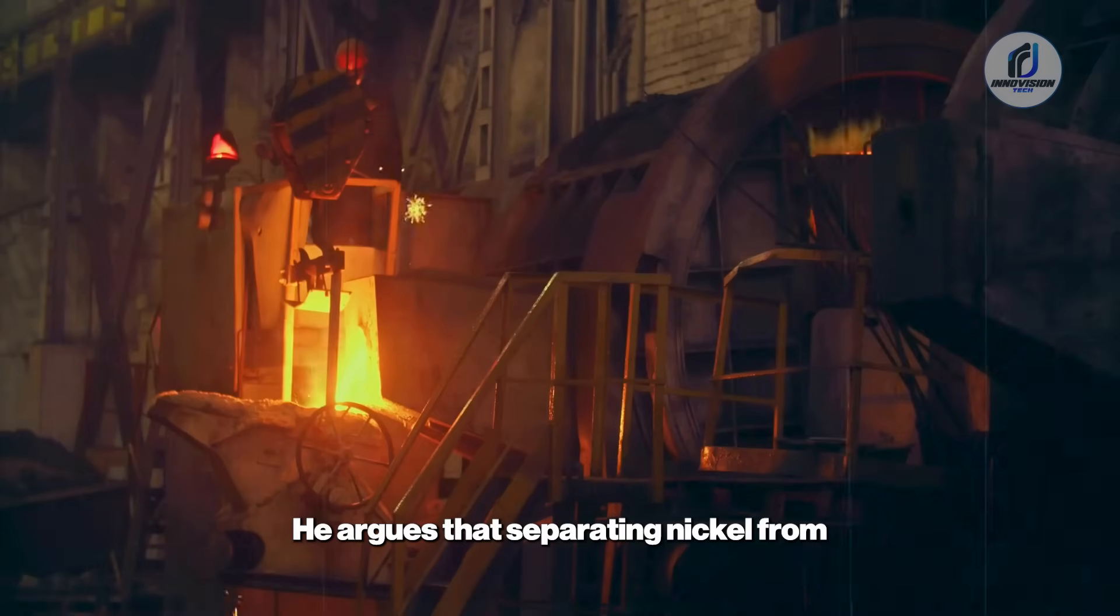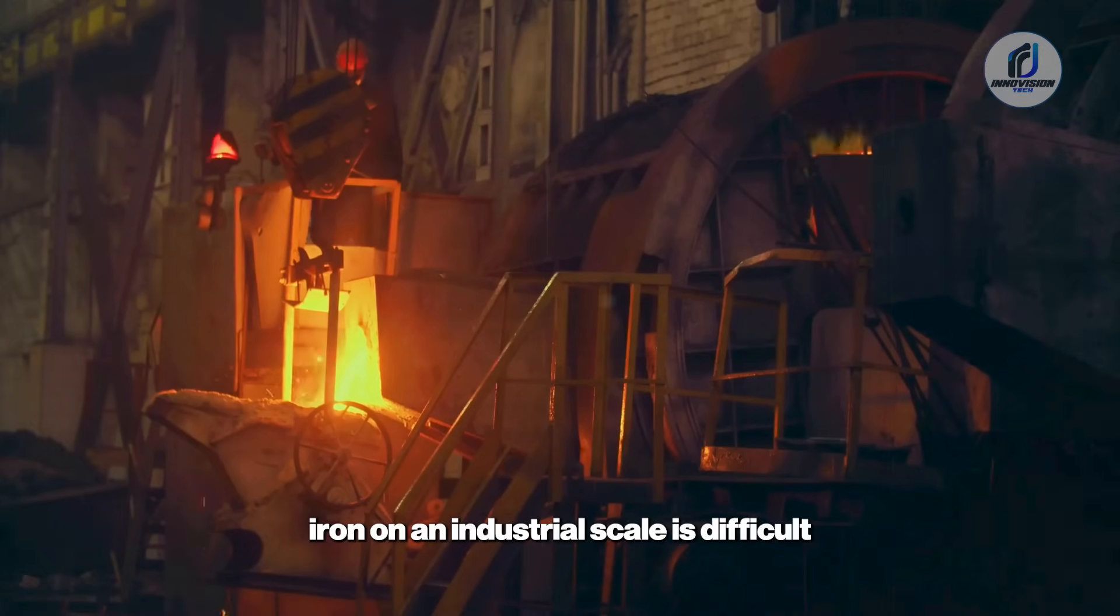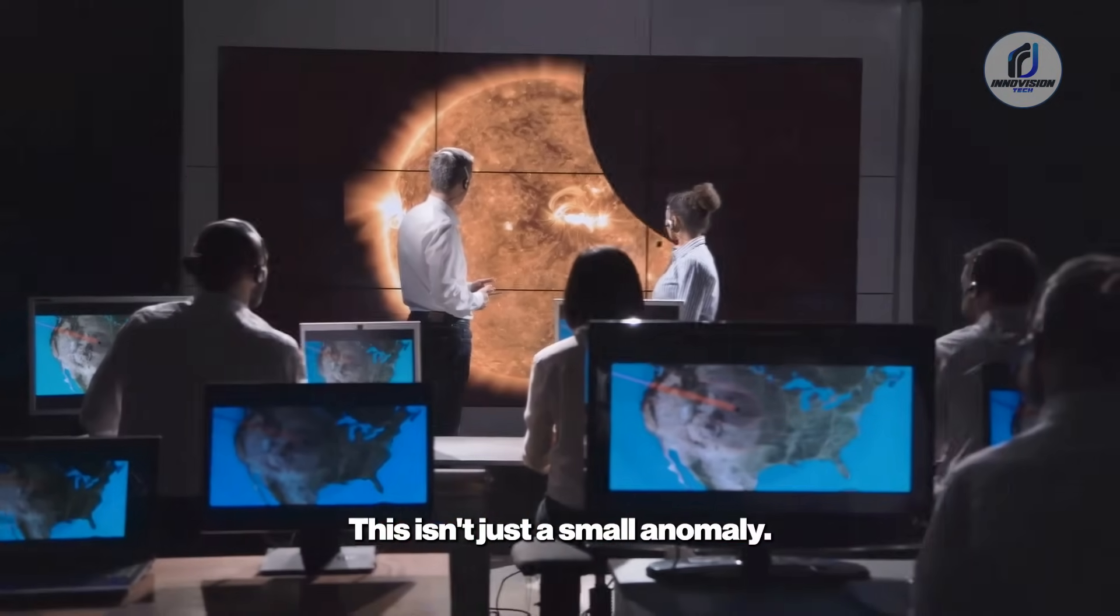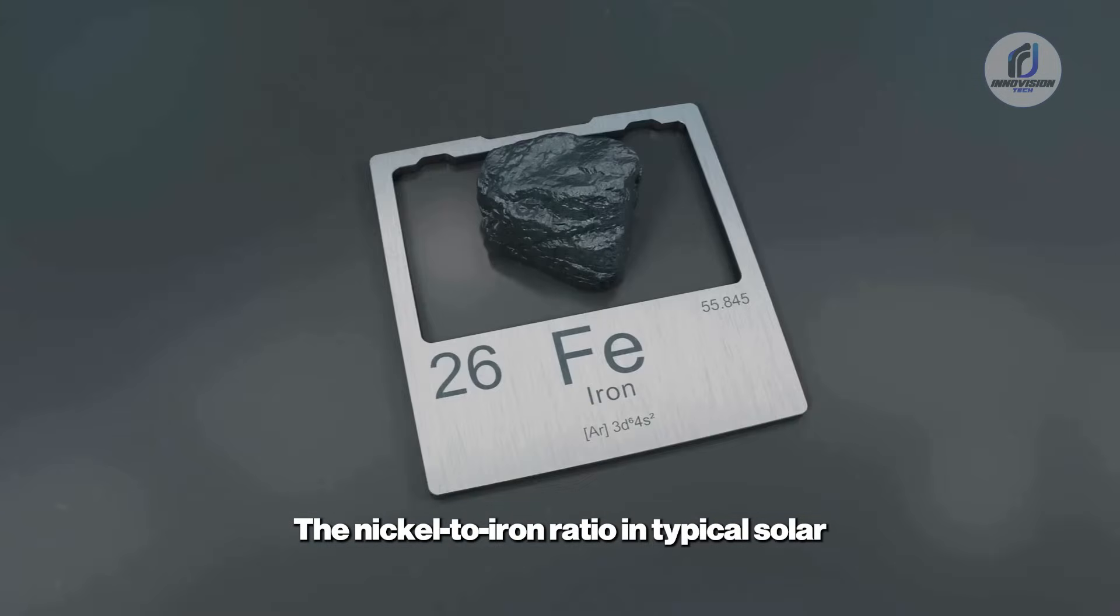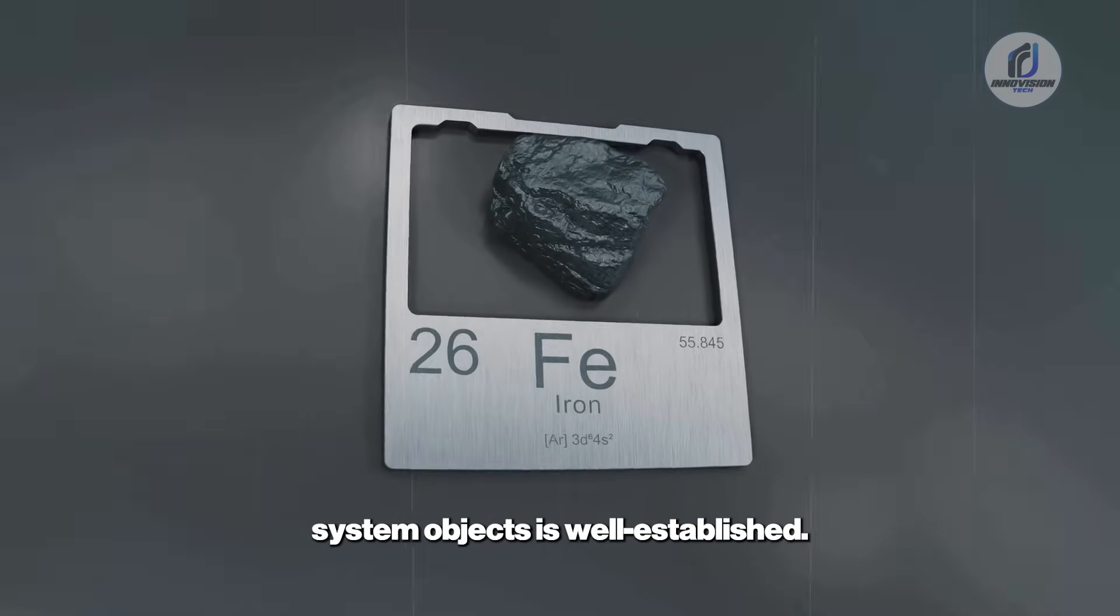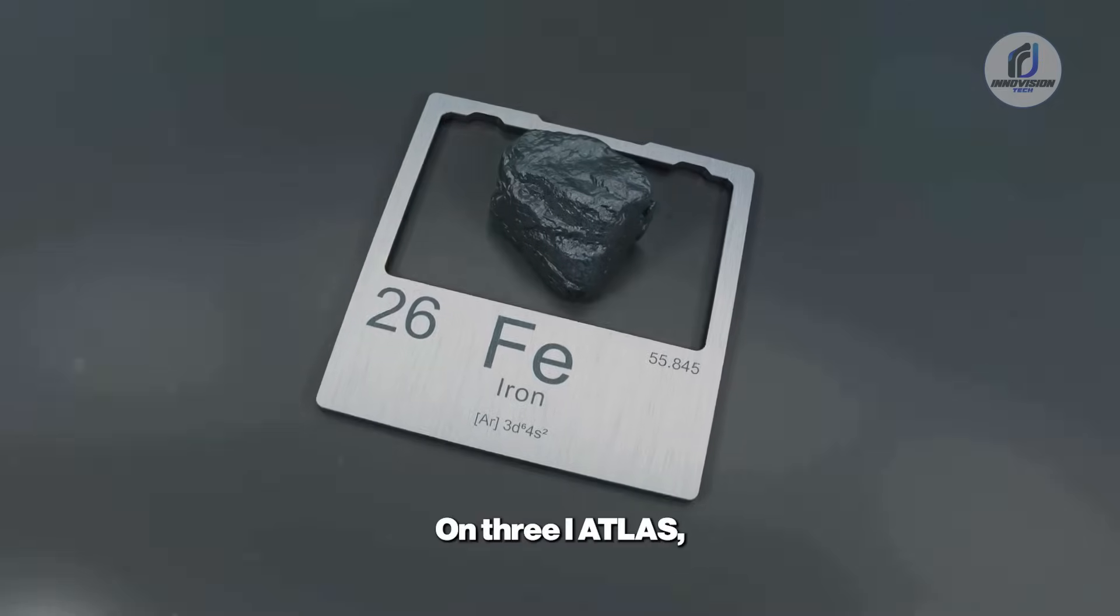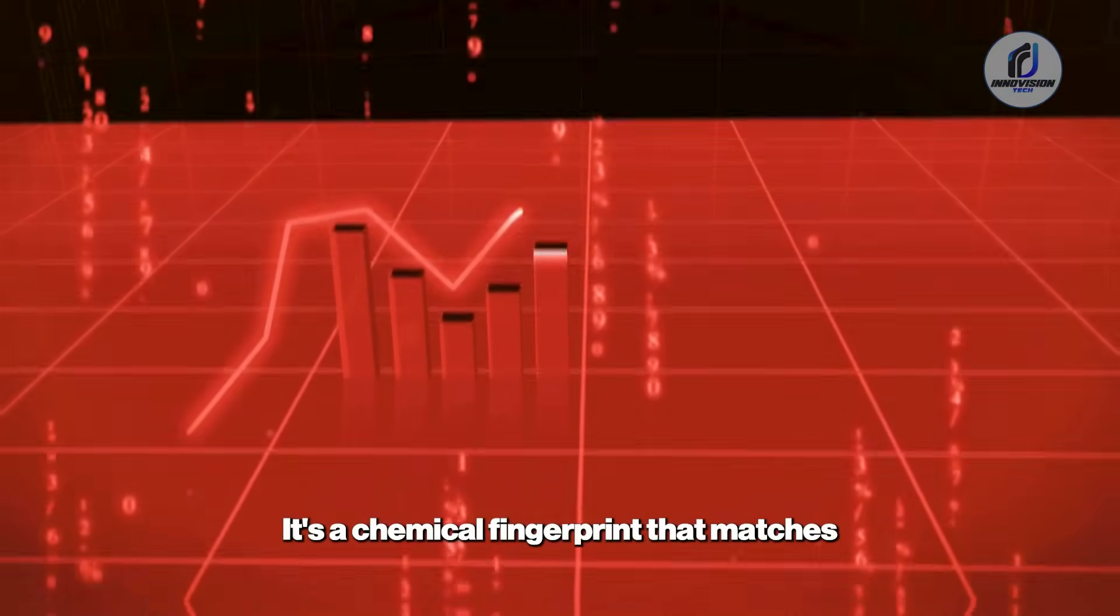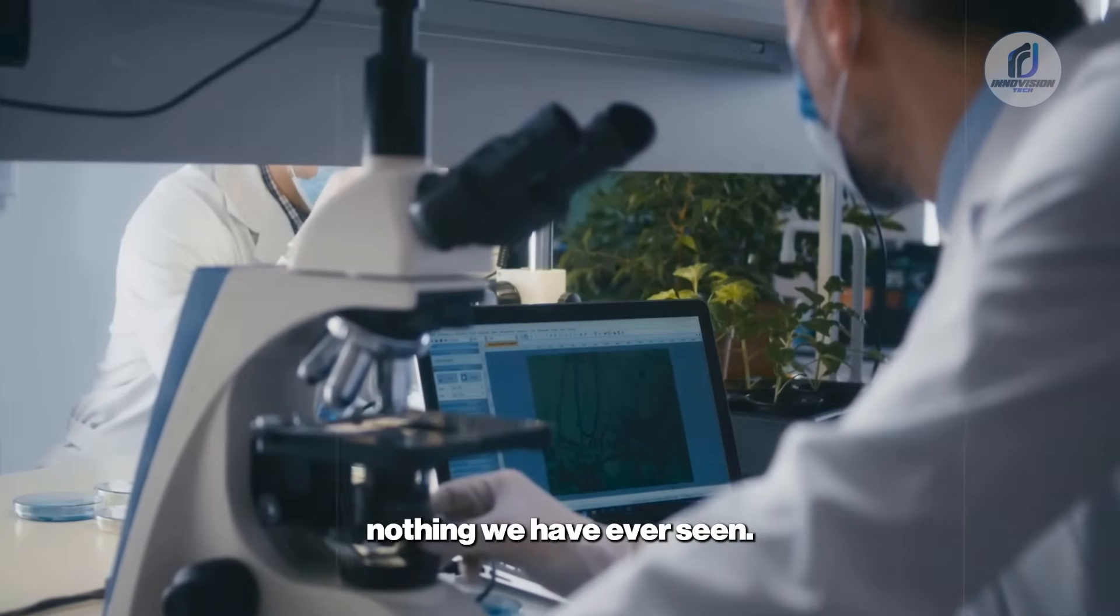He argues that separating nickel from iron on an industrial scale is difficult on Earth. In nature, it's considered next to impossible. This isn't just a small anomaly. The nickel to iron ratio in typical solar system objects is well established. On 3I Atlas, that ratio is completely off the charts. It's a chemical fingerprint that matches nothing we have ever seen.